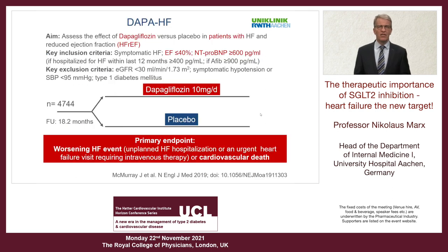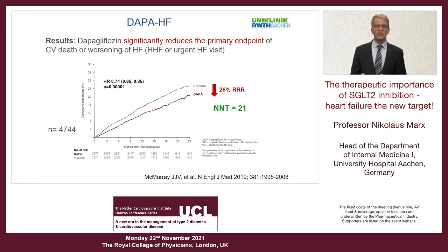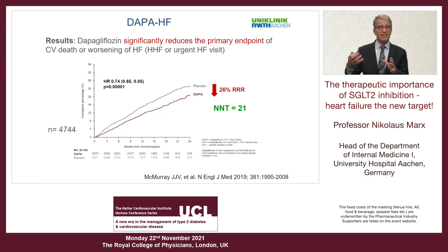The first trial published was the DAPA-HF trial, including patients with an ejection fraction of 40% or below and elevated NT-proBNP. These patients were randomized to dapagliflozin or placebo. The primary endpoint was the combination of worsening heart failure or cardiovascular death. Median follow-up was one and a half years. The primary endpoint showed a very strong and robust reduction of this combined endpoint, with a number needed to treat of 21, and very early separation of the curves.